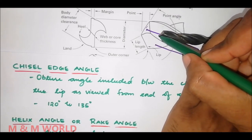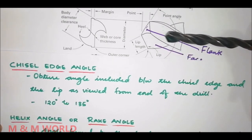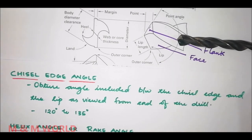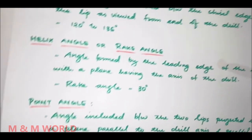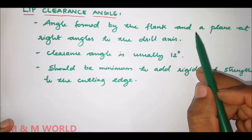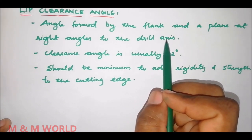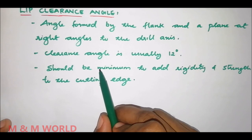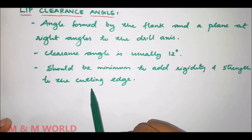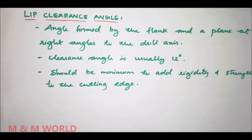This is the lip or cutting edge, and this is another lip — this whole angle between the two lips is the point angle. The last angle is the lip clearance angle. It is the angle formed by the flank and a plane at right angles to the drill axis, normally measured at the periphery of the drill. The clearance angle is 12 degrees in most cases, and it should be minimum to add rigidity and strength to the cutting edge. These are the various elements and tool angles in a twist drill.